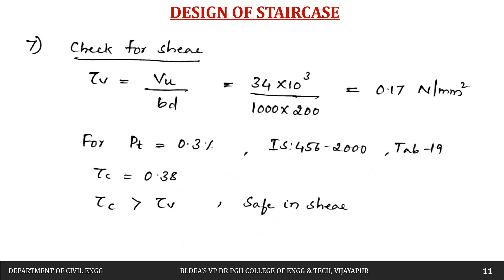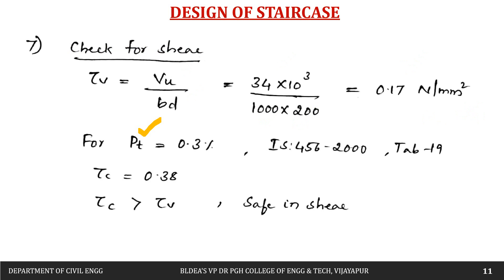Checking shear: τv = Vu / (b × d) = 34 × 10³ / (1000 × 200) = 0.17 N/mm². This is less than 2.8 N/mm², so no section revision is needed. With 0.3% steel, τc = 0.38 N/mm², which is greater than τv = 0.17 N/mm², so the section is safe in shear. In slabs, shear reinforcement is not usually provided.